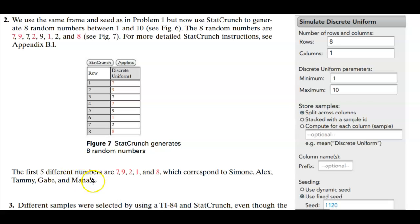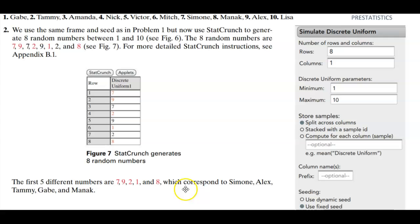So the first five different numbers are 7, 9, 2, 1, and 8 which correspond to Simone, Alex, Tammy, Gabe, and Minak.